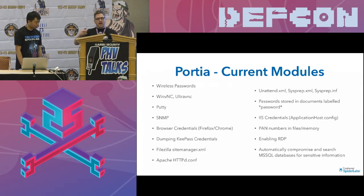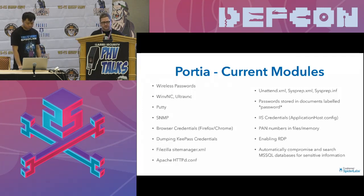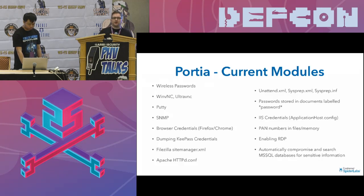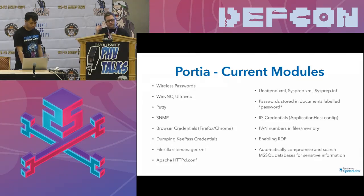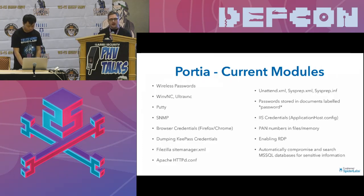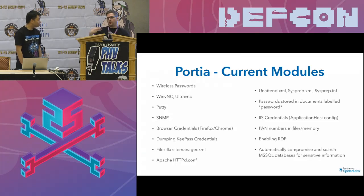Porsche has a bunch of other modules — convenience modules and privilege escalation related modules. This is just a sampling; we're adding more all the time. It's available on GitHub if people want to contribute. Currently it dumps wireless passwords, looks for configuration files known to have passwords such as VNC configurations, dumps browser credentials, key pass credentials, config files. It also has a recent module for automatic compromise of MS SQL databases.